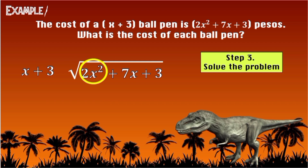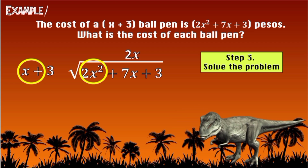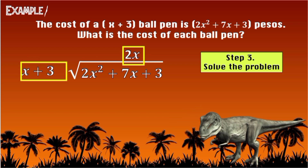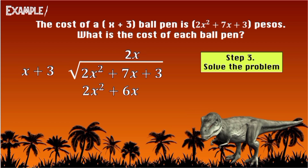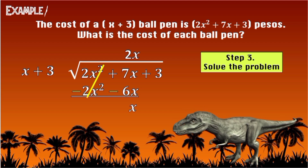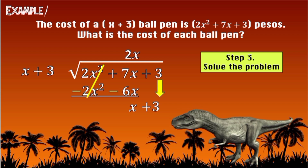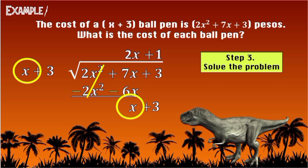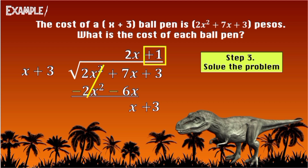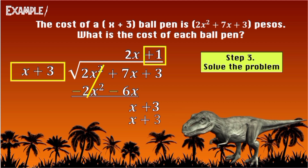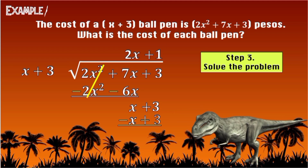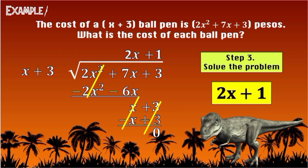First, let's divide 2X² by X — our quotient is 2X. Next, multiply: 2X × (X + 3) = 2X² + 6X. Now subtract — change the sign of the subtrahend, cancel terms, and 7X + (−6X) = X. Then bring down 3. Proceeding: X ÷ X = 1. Multiply: 1 × (X + 3) = X + 3. Subtract and cancel — our final answer is 2X + 1.